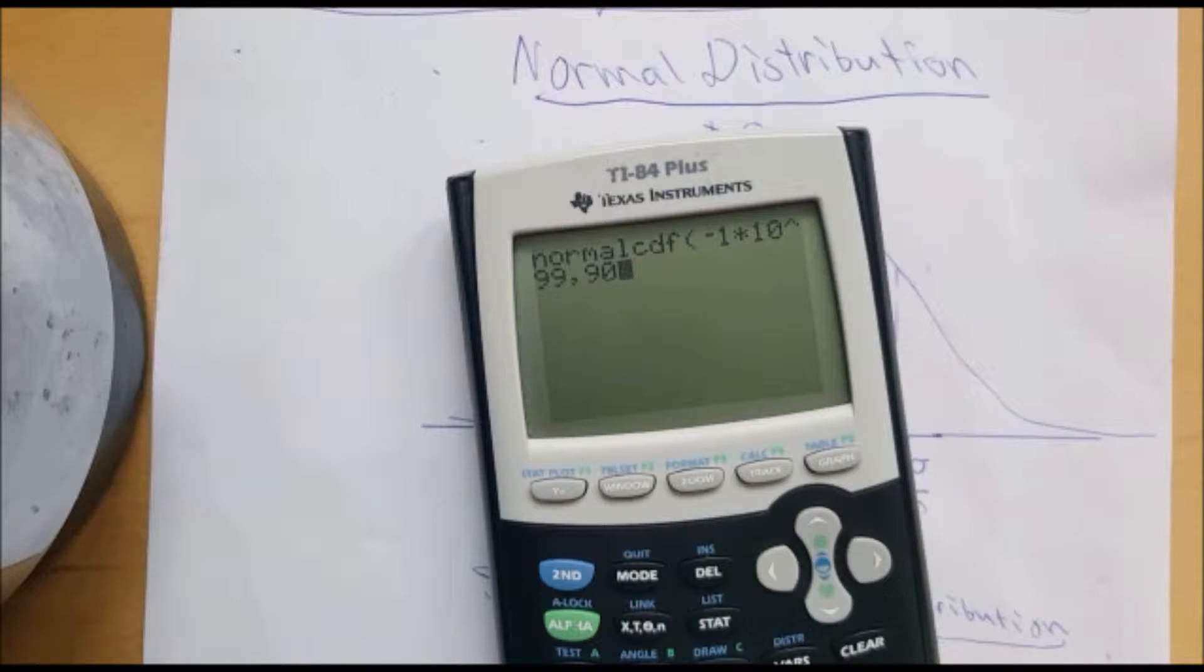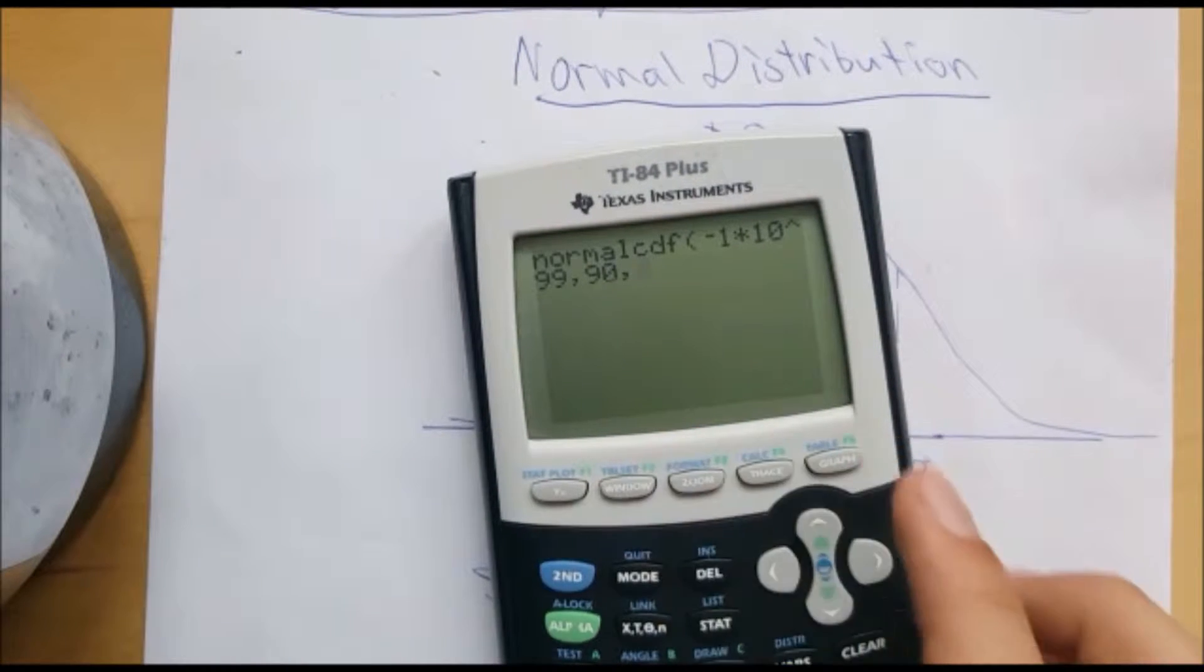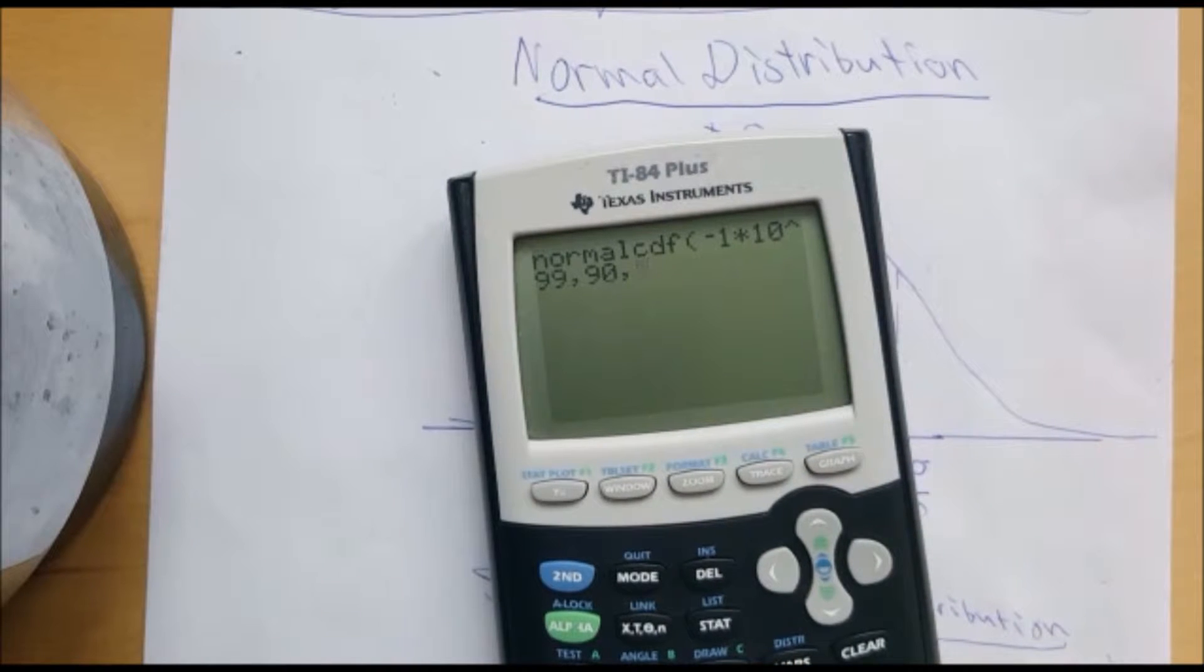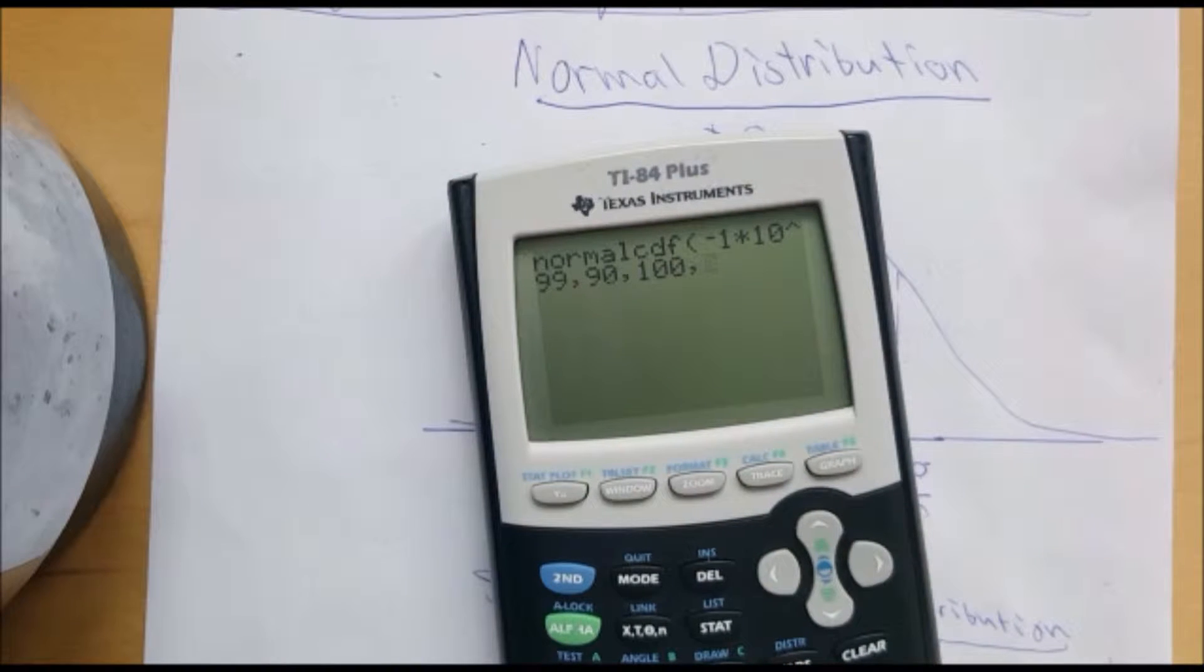Then you plug in the upper boundary and we wanted to find 90. So comma 90, then you plug in the mean and then the standard deviation. Mean was 100, standard deviation was 15.